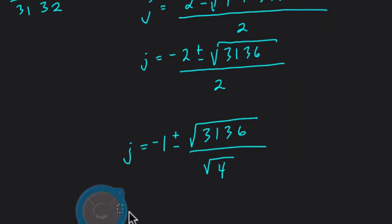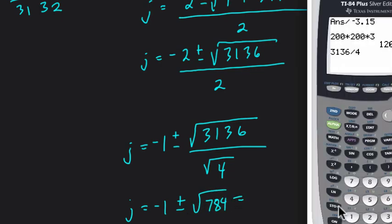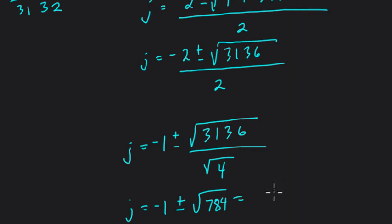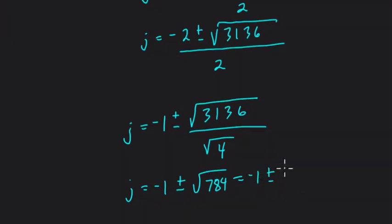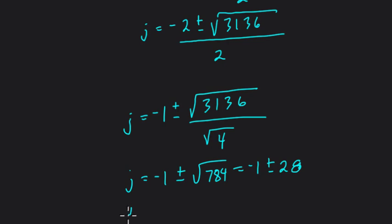So this is J equals negative 1 plus or minus the square root of 784, which might be a perfect square. Let's see. If you write it to the half power, half power means square root, we get 28. So it's negative 1 plus or minus 28. So if we look at this, that finally means our last step, J equals negative 1 plus 28, or J could equal negative 1 minus 28.